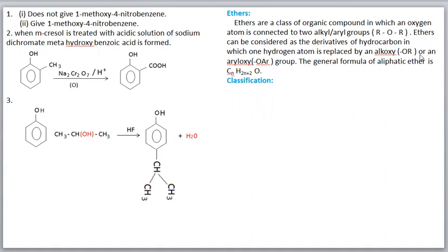Alkoxy can be represented as -OR, and aryloxy as -OAr. The general formula of an aliphatic ether is CnH2n+2O. So alcohols and ethers have the same general molecular formula, meaning alcohols and ethers are functional isomers of each other.